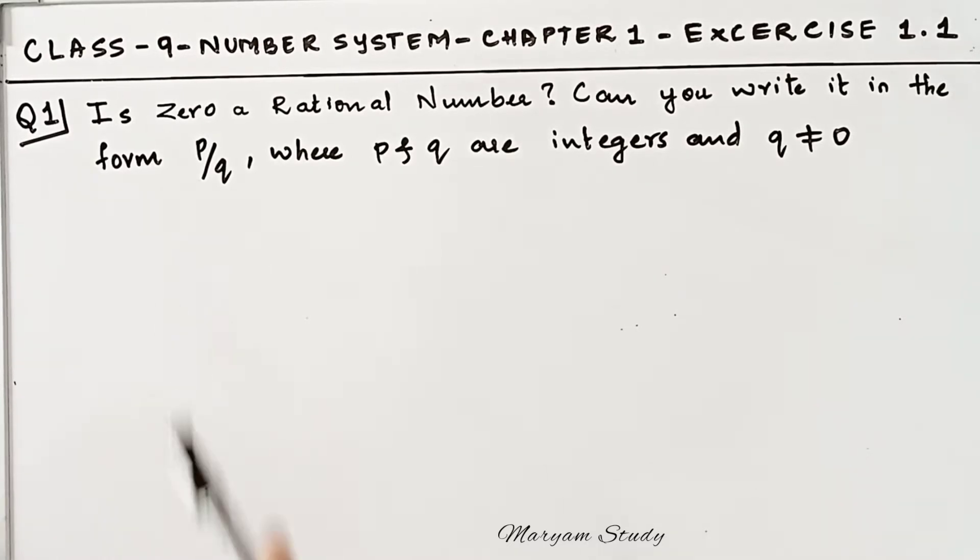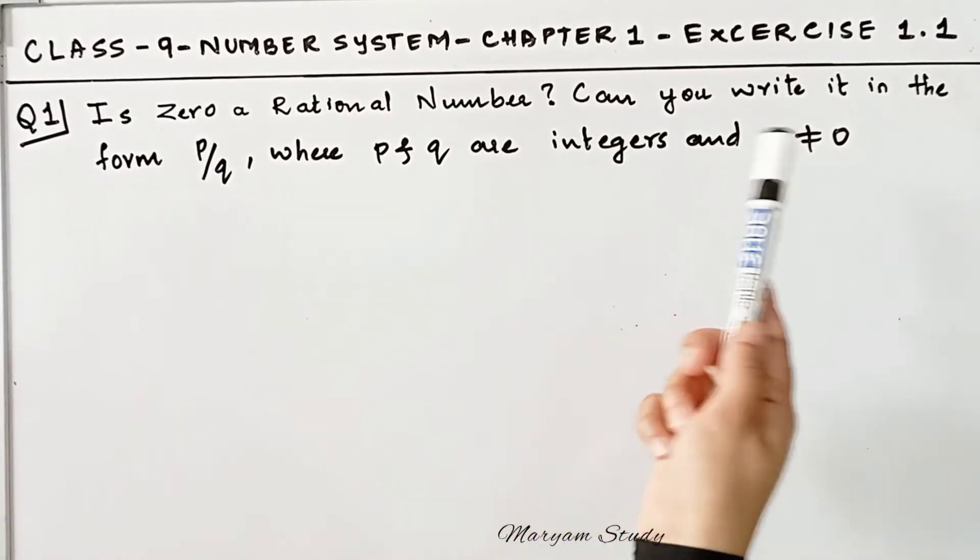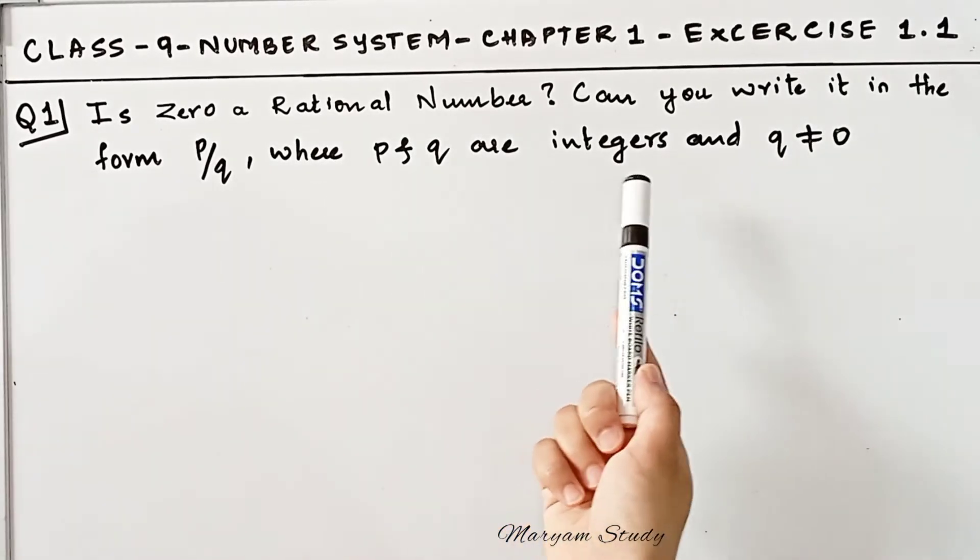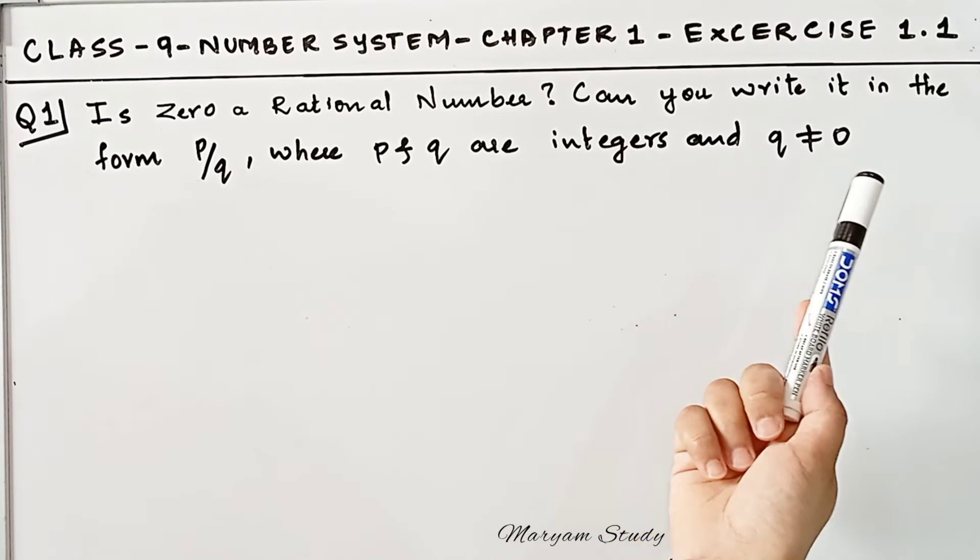So what is the question? Is 0 a rational number? Can you write it in the form of P by Q where P and Q are integers and Q is not equal to 0?